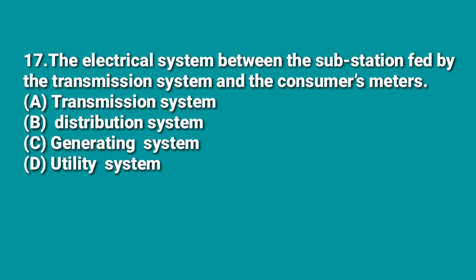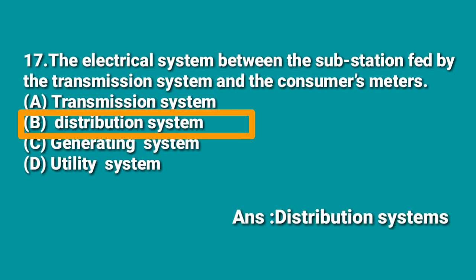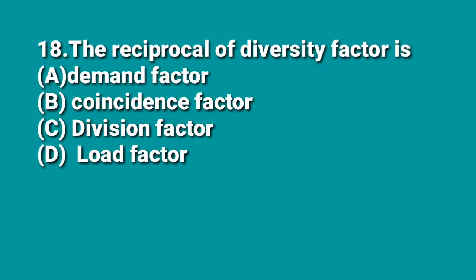The next question: the electrical system between the substation fed by the transmission system and the consumer meters is — A: transmission system, B: distribution, C: generating system, D: utility system. The answer is B, distribution system. The part of the power system that distributes electric power to consumers is called the distribution system.